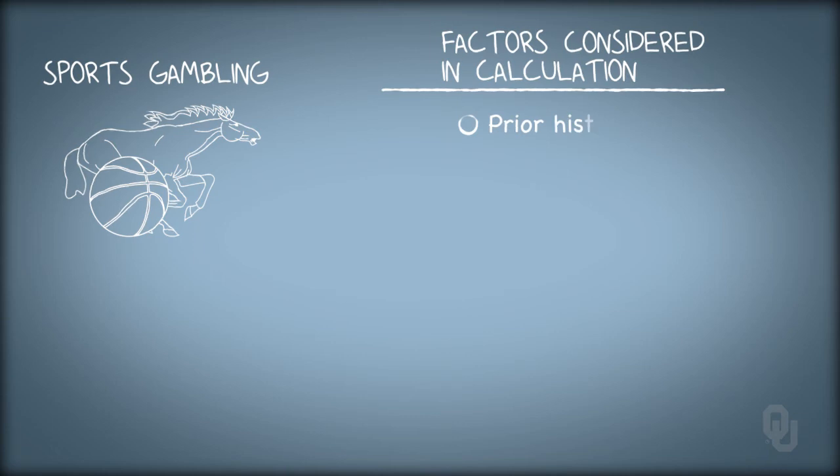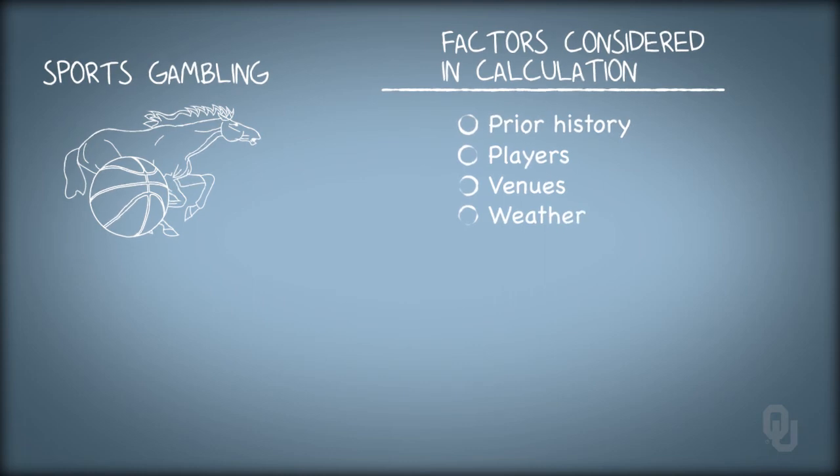One example of subjective probability involves sports gambling, where some prior history is used but also some information about players, venues, and weather conditions, among others, is accounted for when the likelihood of a team winning is calculated.